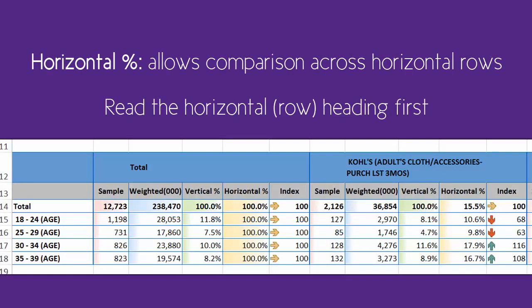The horizontal percentage allows comparison across horizontal rows. It is read in the reverse order of the vertical. You start reading at the horizontal row heading, then apply the criteria from the column. For example, let's look at these two numbers in the horizontal percentage.